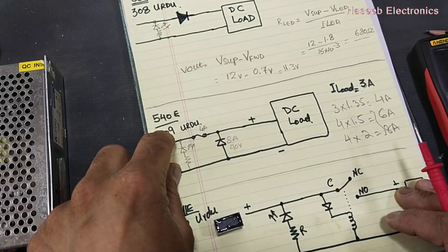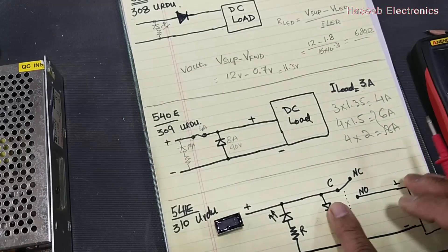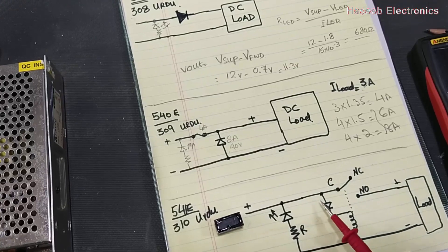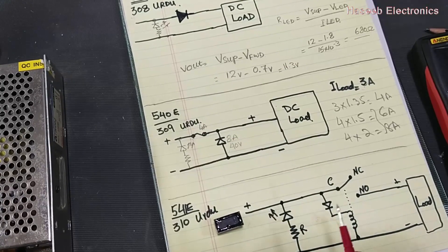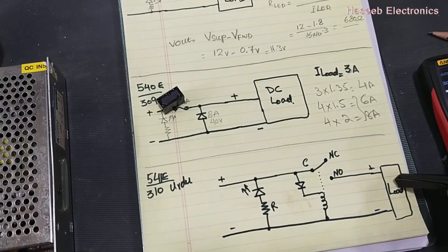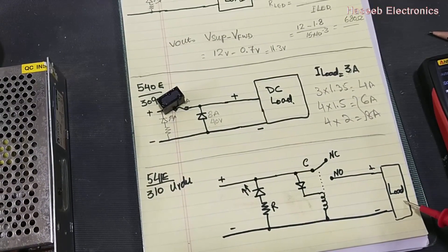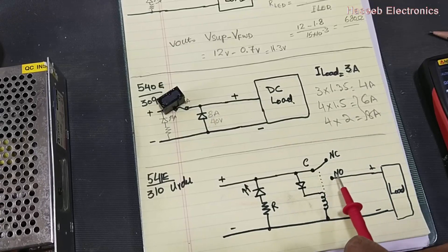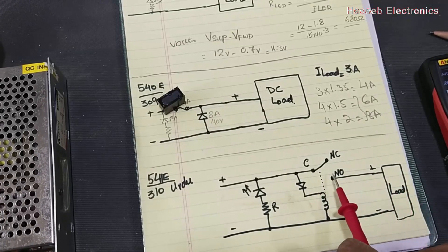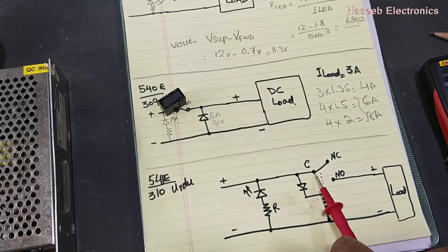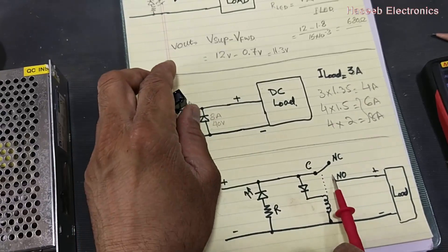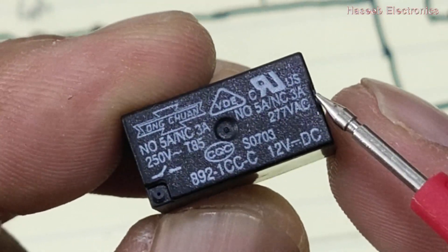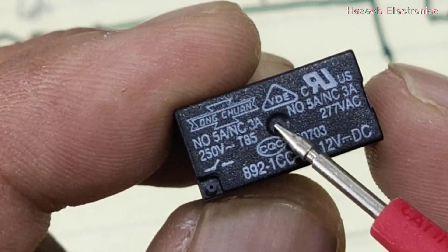Whenever the polarity was reversed, the fuse would burn out. But with this relay circuit, the load receives voltage only when the polarity is verified — positive here and negative here. We need to determine the load current when selecting a relay. For example, we must select double or triple the load current rating: if the load is 1 ampere, we must select a 2 or 3 ampere relay so the contacts stay within a safe limit with no sparking, and the circuit works smoothly.